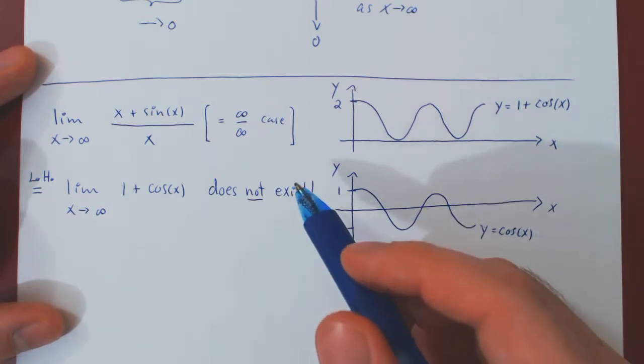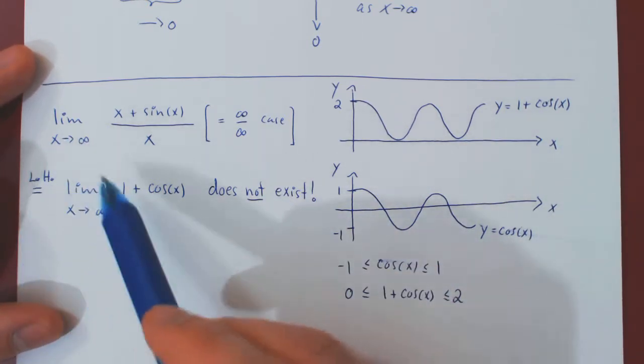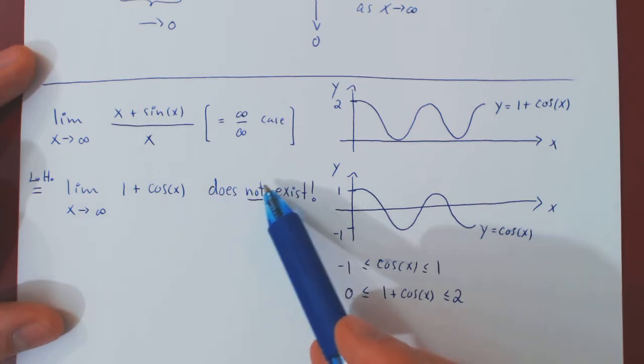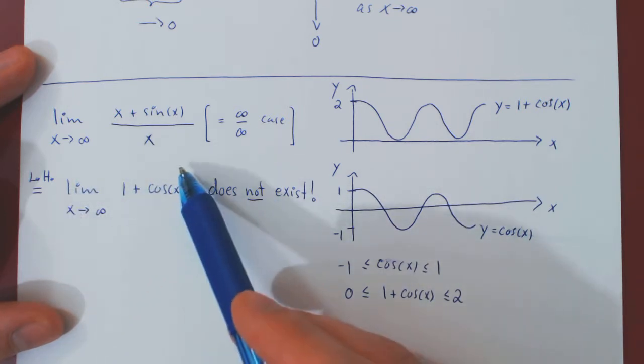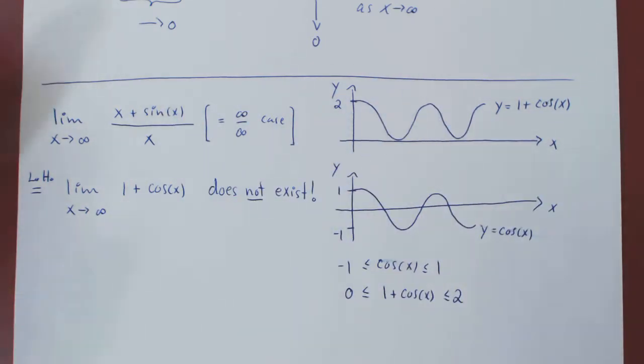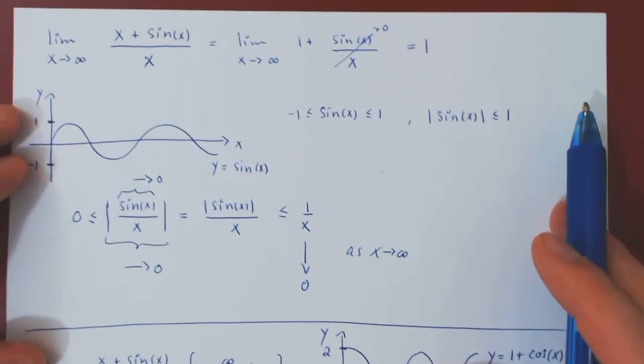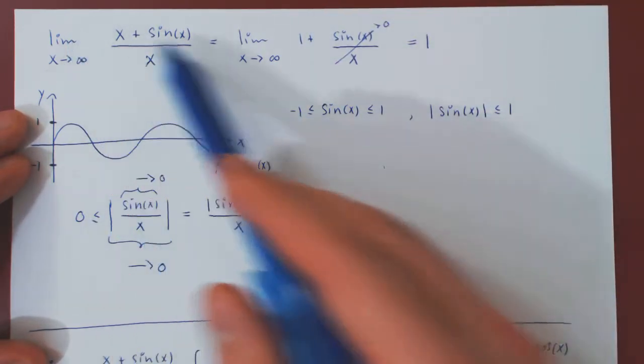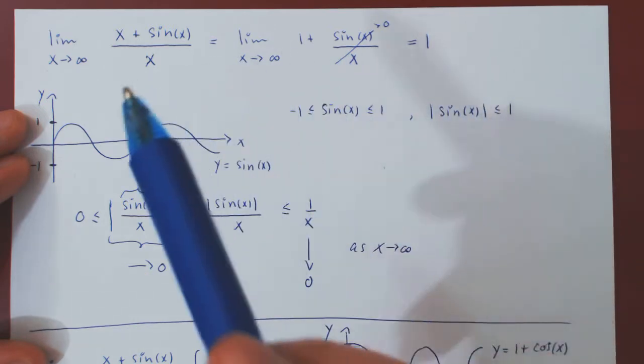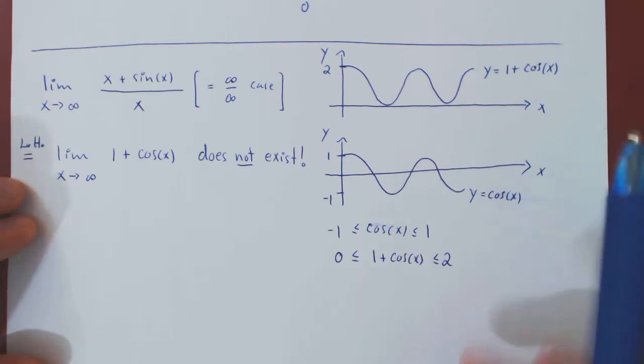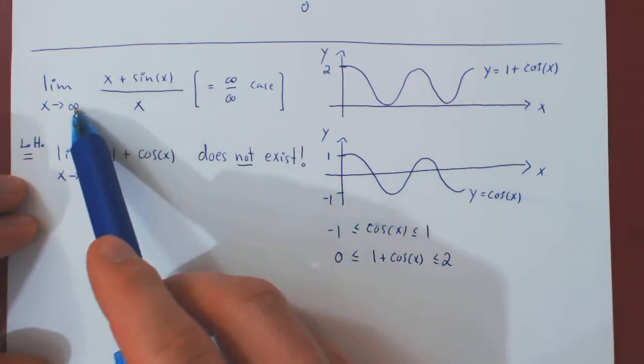But here's what's interesting. L'Hopital's rule, at that point you might have a hard time with this, because you might think, well, wait, isn't that saying that because this limit does not exist, does that mean that the first limit does not exist? But we know it's clearly not the case. With an elementary solution using the squeeze theorem, we've already proved that the limit is quite simply 1. So, we know the original limit does exist. So, what's wrong here?